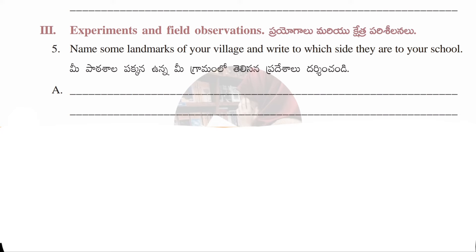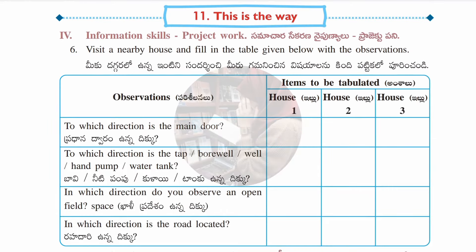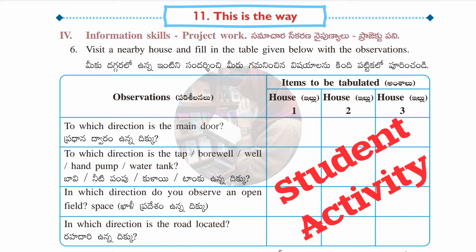Fifth question — experiments and field observation: name some landmarks of your village and write which side they are relative to your school. This is a student activity you have to do yourself. Sixth question is a project work — also a student activity. Observations are given in the first column; for each house (first, second, third), note things like which direction the main door faces or where the hand pump is.